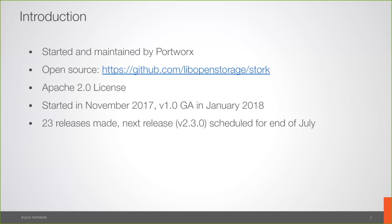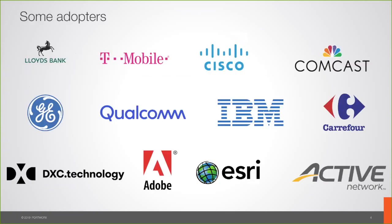Stork was started and maintained by Portworx, which is a software-defined solution built for Kubernetes that helps you manage data for container workloads. It's an open-source project available on GitHub under the Apache 2.0 license. Stork was started in November 2017 and went GA in January 2018. Since then, we've had 23 releases, and the next 2.3.0 release is scheduled for the end of July. These are some of the adopters currently using Stork in production or pre-production.